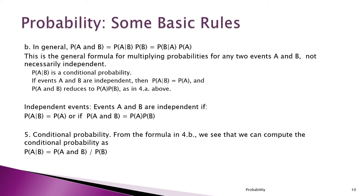Finally, we have the rule for computing conditional probability. We're just rearranging the previous multiplication rule. If the probability of A and B equals the probability of A given B times the probability of B, then the probability of A given B is exactly equal to the joint probability of A and B divided by the probability of B — the event after the 'given.'